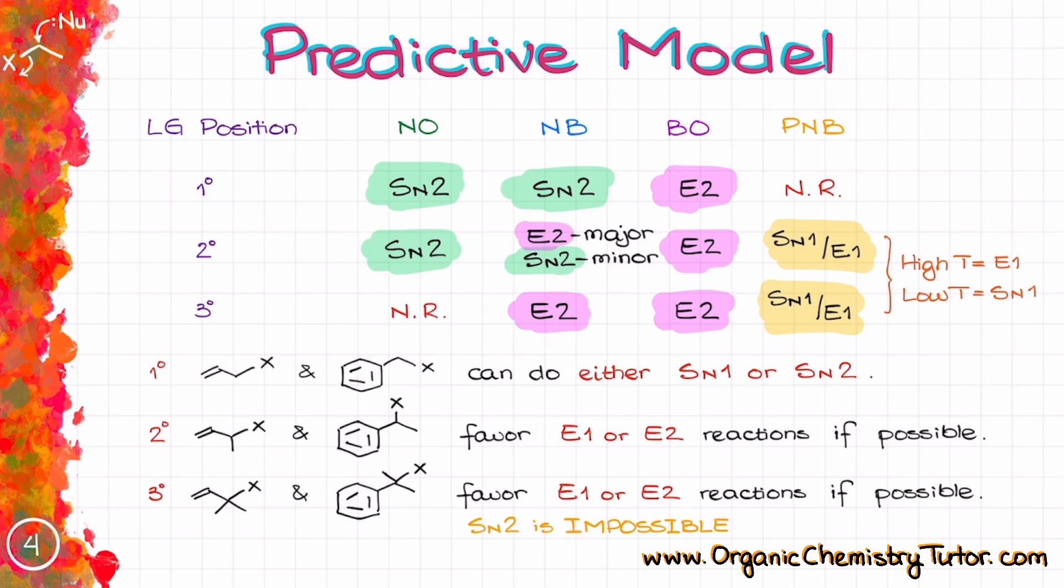So this is the predictive model which is going to give you the correct answer in 99% of cases. The only time when it fails is when we have some sort of trickery going on in our molecule. So take a screenshot of this scheme, or better yet, copy it down and memorize it. I can guarantee it will be a saving boat on the test.